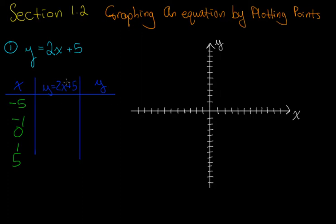And so we'll plug that in, and we get 2 times negative 5 plus 5. So 2 times negative 5 is negative 10 plus 5 is negative 5. This next one is 2 times negative 1 plus 5. So 2 times negative 1 is negative 2 plus 5 is 3.